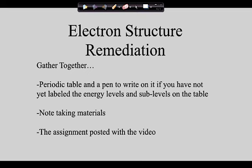To get started you're going to need your periodic table, and if you have not already labeled it with the energy levels and sublevels, you'll need a pen to do that. You'll also need note-taking materials. On our website where you found the link to this video, you'll also find a link to a practice assignment with five orbital filling and five Lewis dot structures that you need to print and complete before the review session.